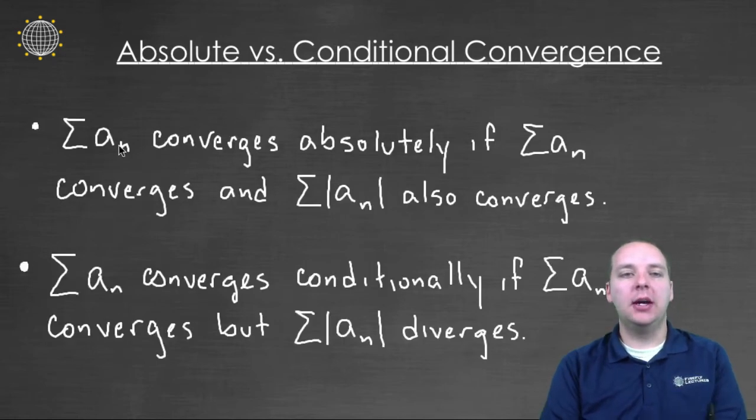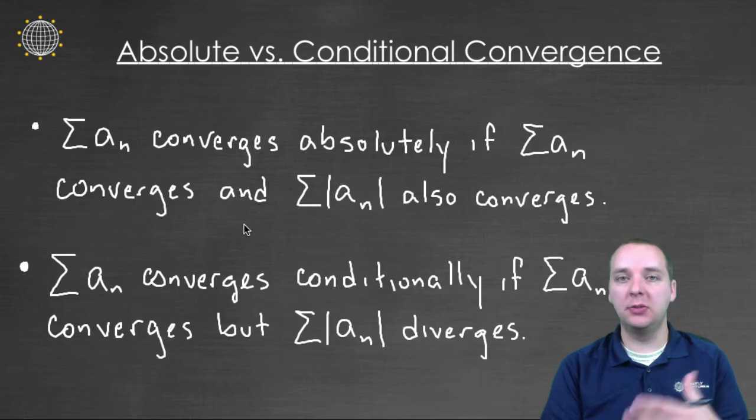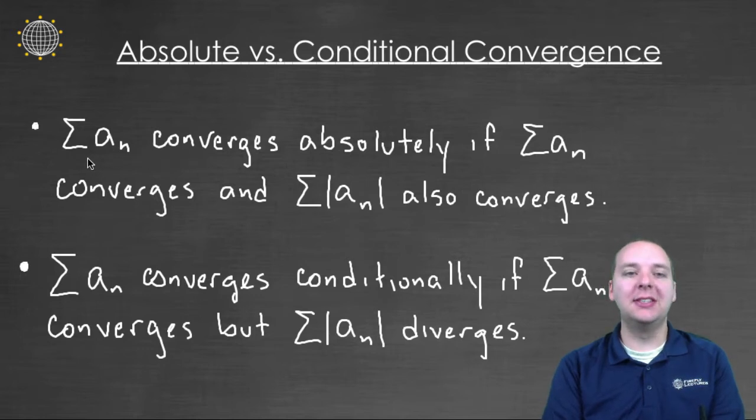Here's the definitions. I'll go ahead and warn you, they're a little wordy. So let's read them first, and then we'll explain them in just plain English. So the first one says the series converges absolutely if the series converges, obviously that's a basic criteria, as well as the sum of the absolute value of those terms also converges.